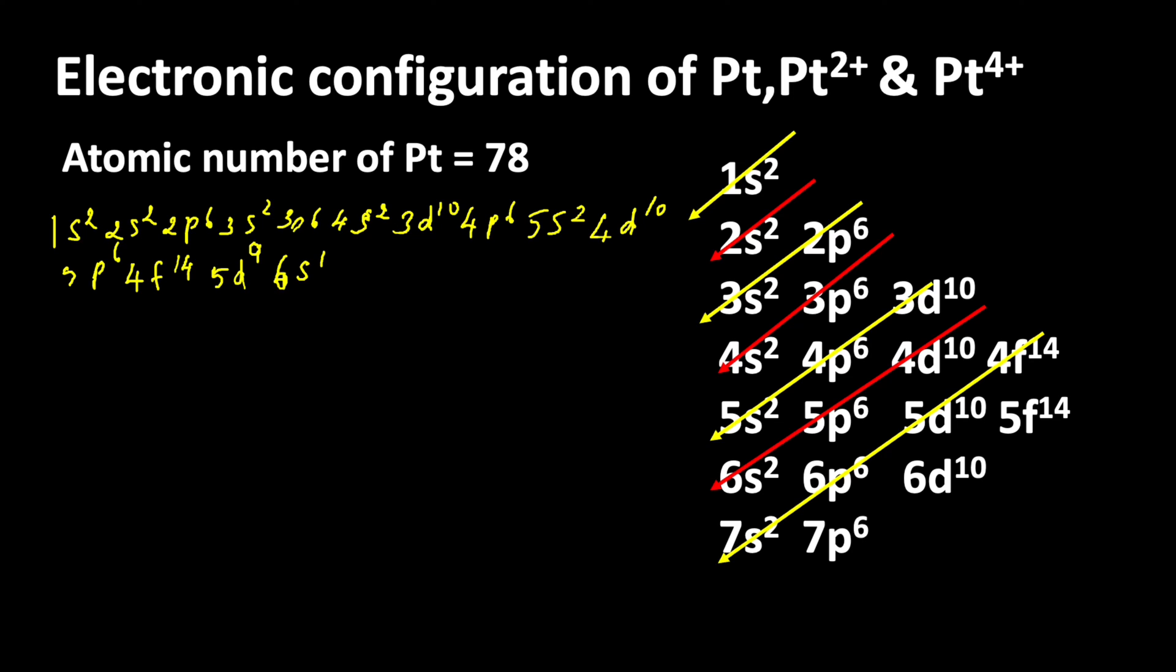So we change the electronic configuration of platinum to 5d⁹ 6s¹. This is the complete electronic configuration of platinum. This can be simplified by using noble gas configuration. Here we use xenon, whose atomic number is 54. From 1s to 5p orbitals represent xenon. So write xenon inside the square bracket, then after that 4f¹⁴ 5d⁹ 6s¹. This is the condensed electronic configuration of platinum.